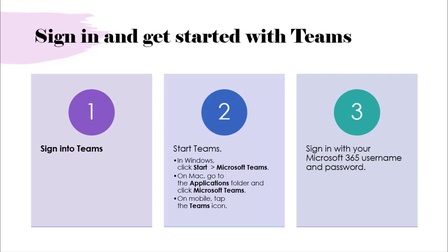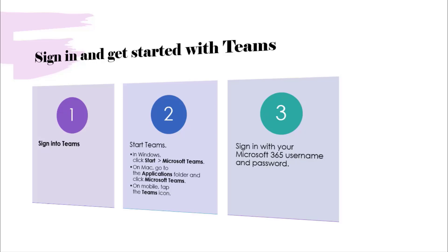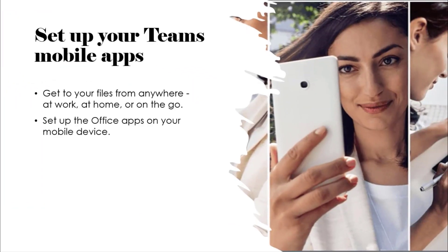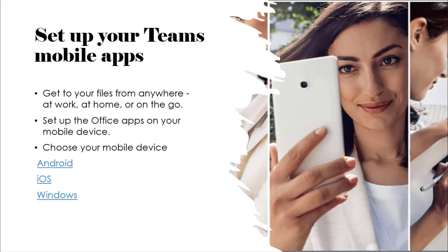Whether you are on mobile, desktop application, Apple, or Android — these are the three steps. The main thing is that you need your user ID, password, and password reset. For your Teams setup, choose your device: Android, Apple, or Windows — these are the three types. You can download the application for desktop, iOS, or Android.